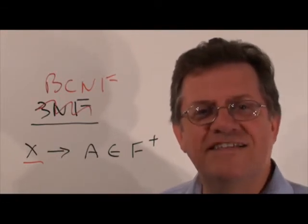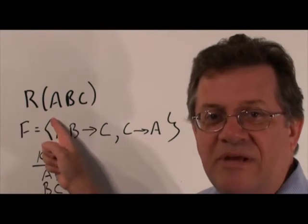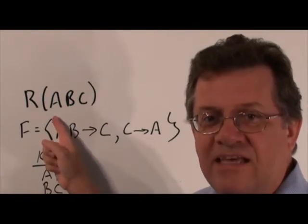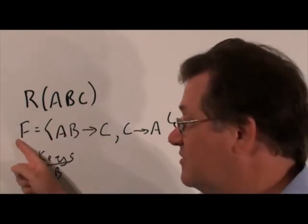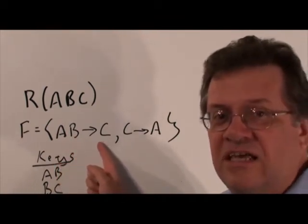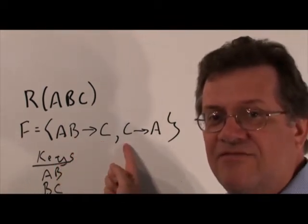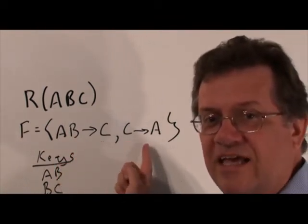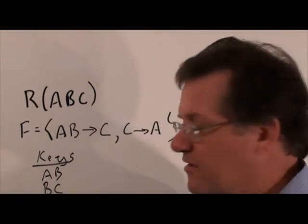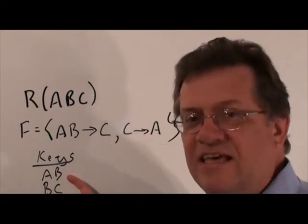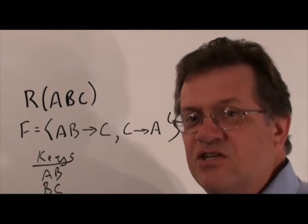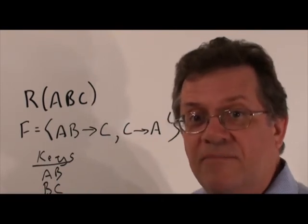Now let's take a look at an example. We have R(A, B, C) and two sets of functional dependencies: AB functionally determines C, and C functionally determines A. In this example the keys are as follows: AB is a key and BC is a key. So all the attributes are prime.